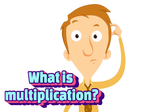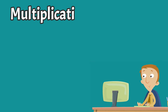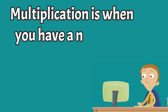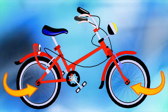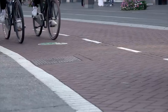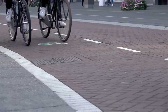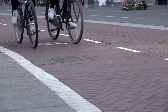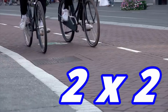What is multiplication? Well, multiplication is when you have a number a certain number of times. For example, a standard bike has two wheels, but if there are two bikes, then you have the number two, two times. In other words, two times two. That's multiplication.